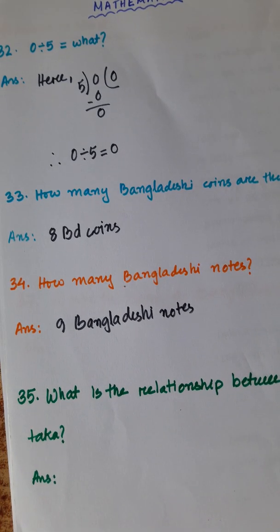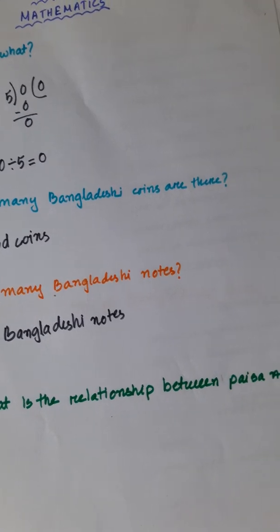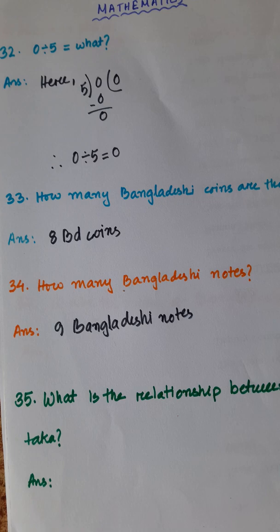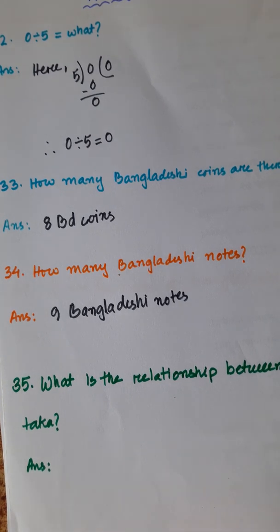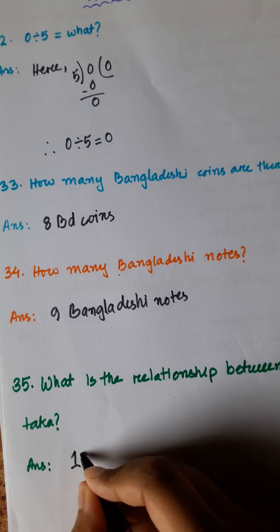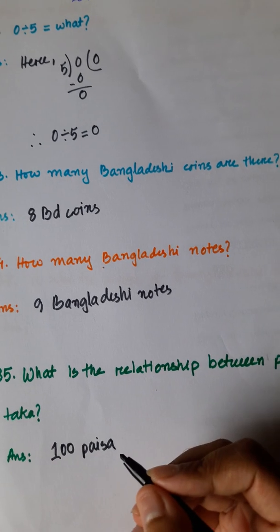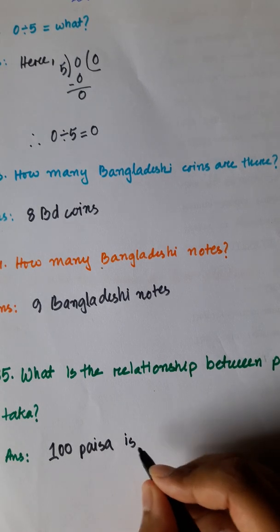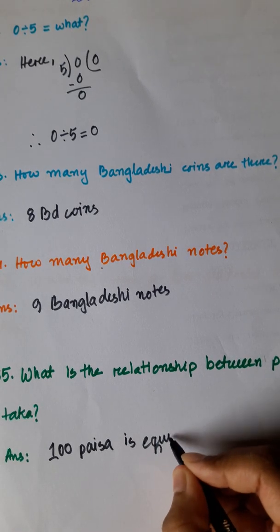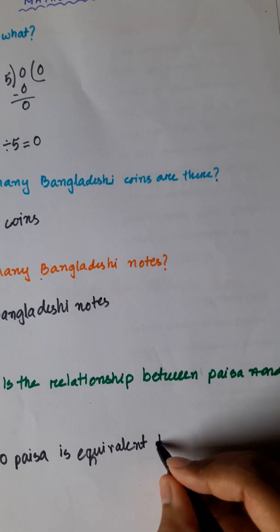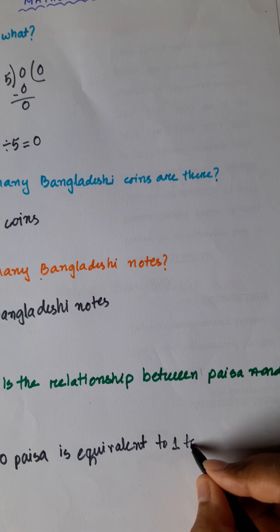Number 35. What is the relationship between Paisa and Taka? The relationship between Paisa and Taka is 100 Paisa is equivalent to 1 Taka.